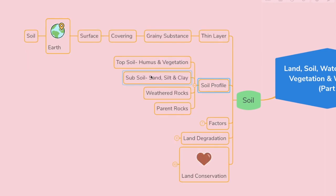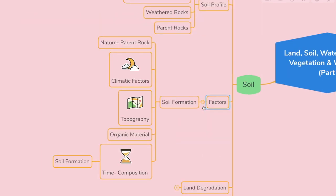Let's look at the soil profile. Right on top you have topsoil with humus and vegetation — that's where you grow your crops. Just below that you have subsoil with sand, silt, and clay. Below that is weathered rock material, and below that is the parent rock. The factors that affect soil formation are: nature of the parent rock, climatic factors, topography, organic material, and time taken for the composition of soil.